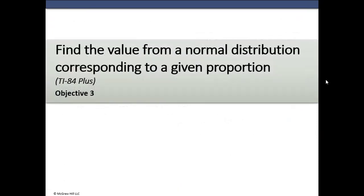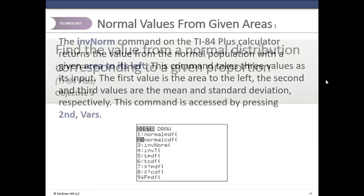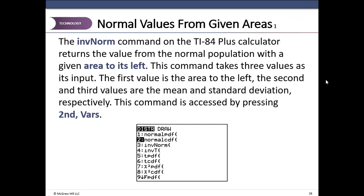Then we go straight to find the value from a normal distribution corresponding to a given proportion. This is like finding the z when the area to the left of z is given. But here we will be dealing with a regular normal distribution, not a standard normal distribution or z distribution. The invNorm command on the TI-84 plus calculator returns the value from the normal population with a given area to its left. This command takes three values as its input. The first value is the area to the left. The second and the third values are the mean and standard deviation respectively. This command is accessed by pressing second vars.